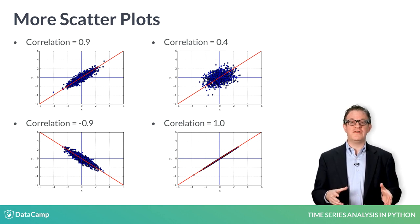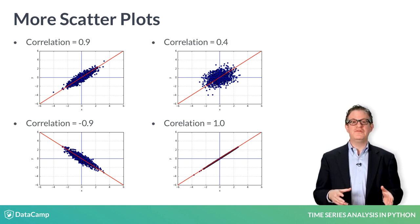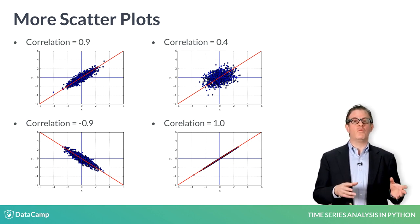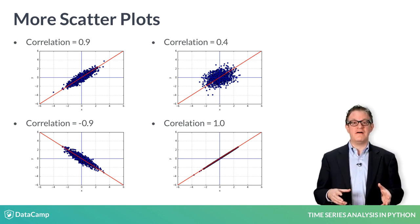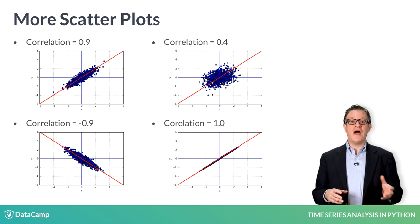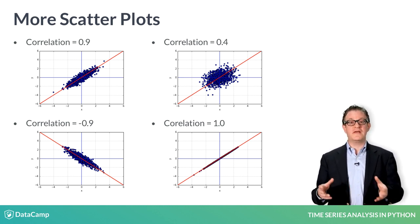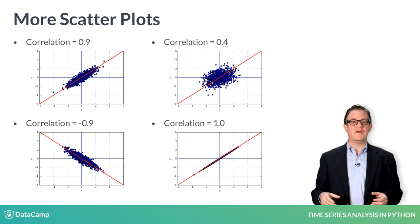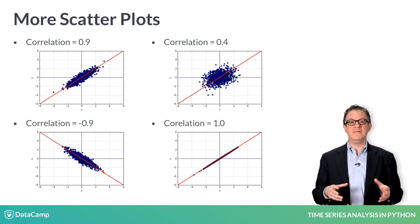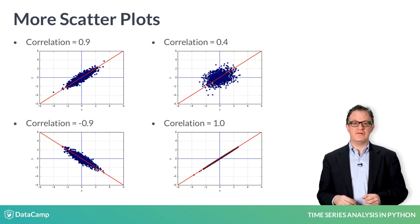The correlation coefficient is a measure of how much two series vary together. A correlation of 1 means that the two series have a perfect linear relationship with no deviations. High correlations mean that the two series strongly vary together. A low correlation means that they vary together but there is a weak association. And a high negative correlation means they vary in opposite directions, but still with a linear relationship.